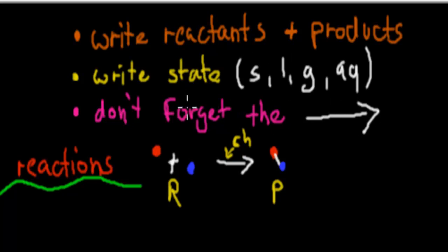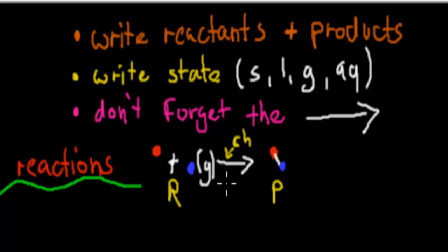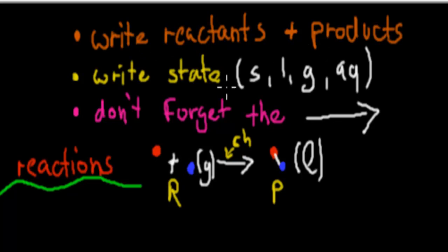Also write the state of each substance — whether it is solid, liquid, gas, or aqueous. A lot of people always forget that part when writing a chemical reaction. In this example, the two reactants might be gas, so we write 'g' for gas. The new product that forms when they join together might be liquid, so we write 'l' for liquid. Make sure you write the reactants, the product, the state they're in, and the arrow to indicate a chemical reaction has occurred.